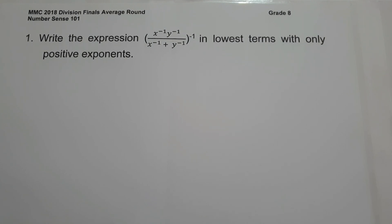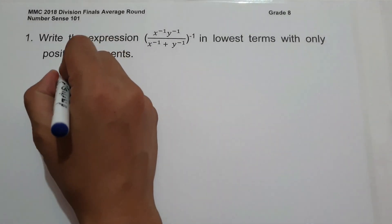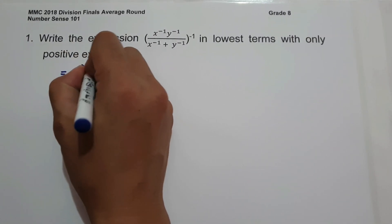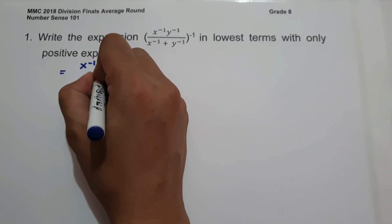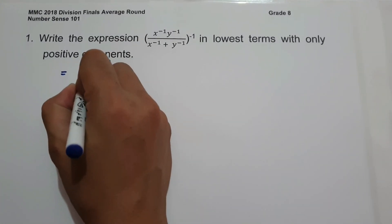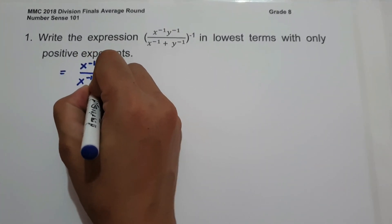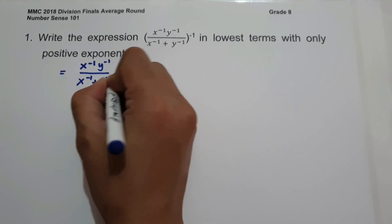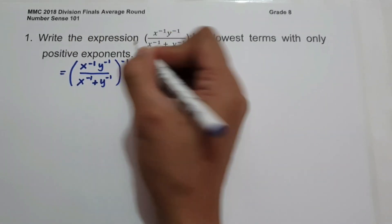On number 1, write the expression quantity x raised to negative 1 times y raised to negative 1, all over x raised to negative 1 plus y raised to negative 1, raised to negative 1, in lowest term with only positive exponents. So let us write first the given: x raised to negative 1 times y raised to negative 1 over x raised to negative 1 plus y raised to negative 1, and then raised to negative 1.